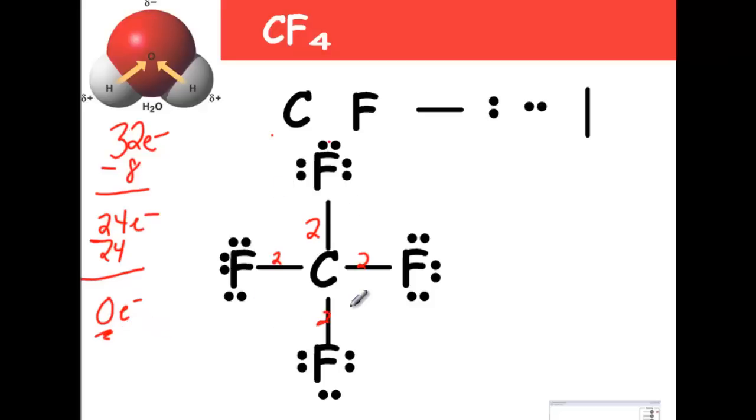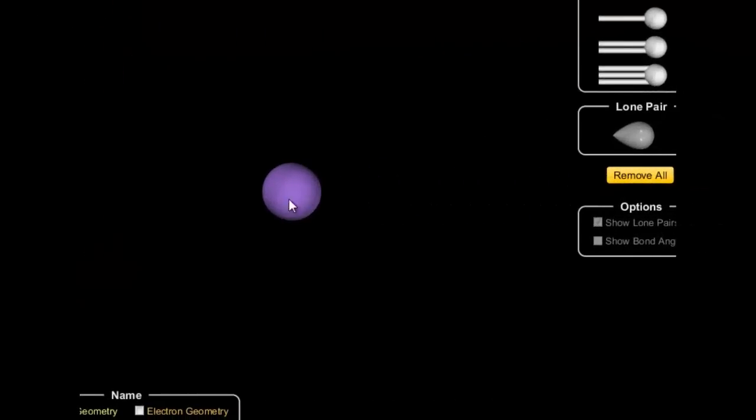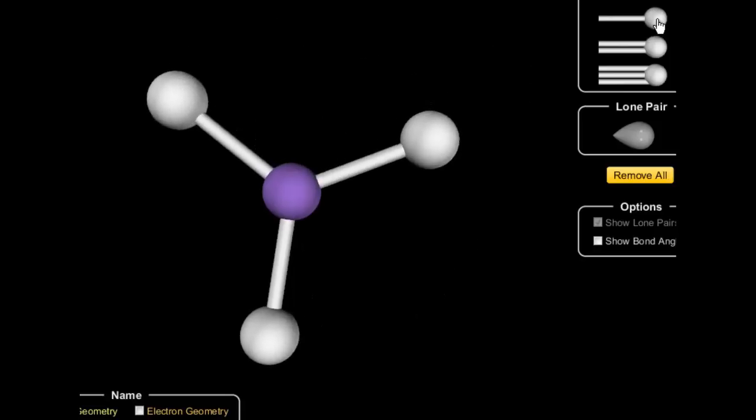Now let's take a look at what shape this is, because on paper, it looks like these angles are really 90 degrees apart, and that's not what it's like in real life. So here's our central atom, here's our carbon, fluorine, fluorine, fluorine, fluorine.